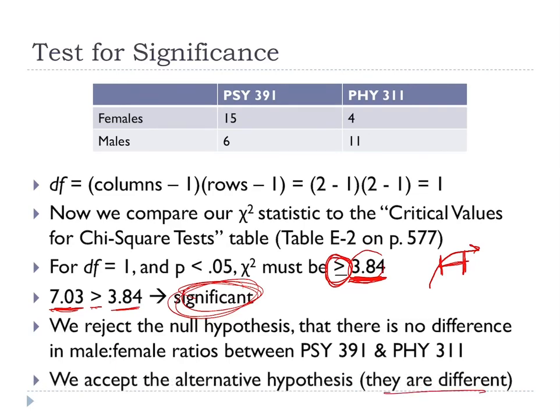We accept the alternative hypothesis that the two classes are different. And that, in essence, is what a chi-square is. In the next video, I'll take you through one of the worksheets you'll fill out, and we'll talk about it in class.